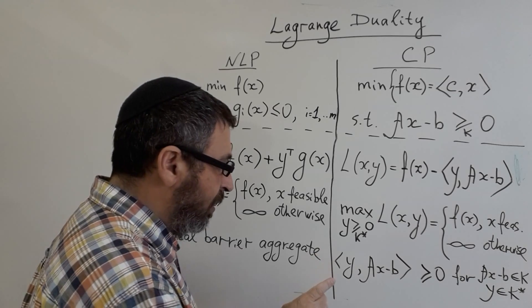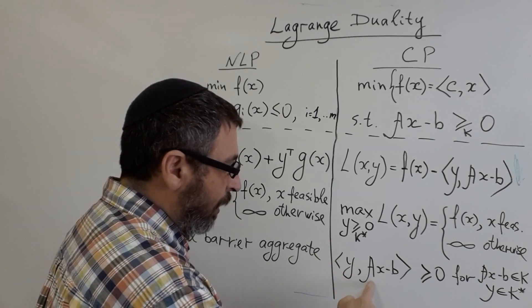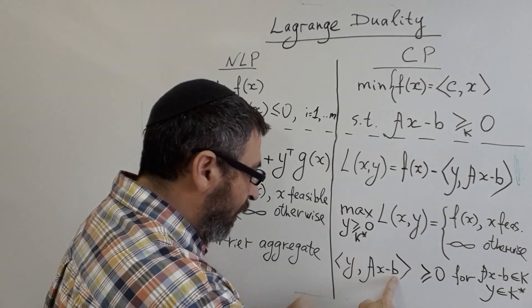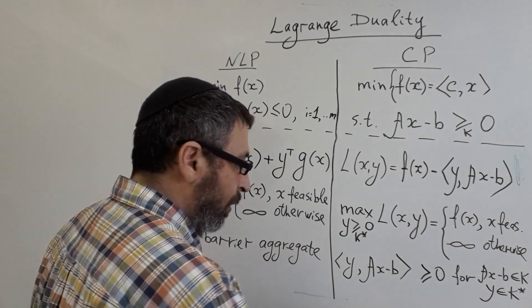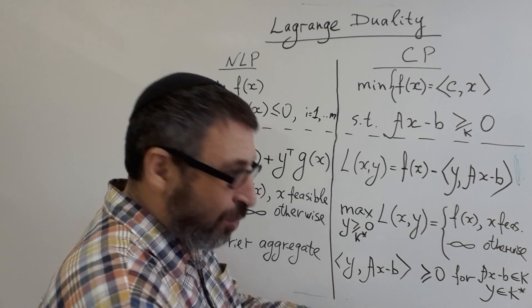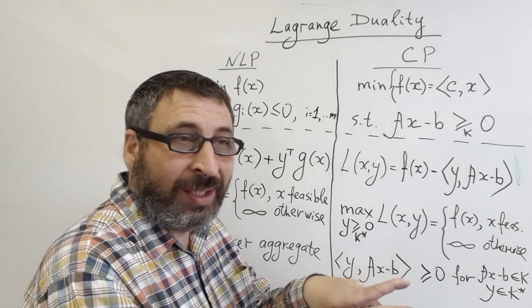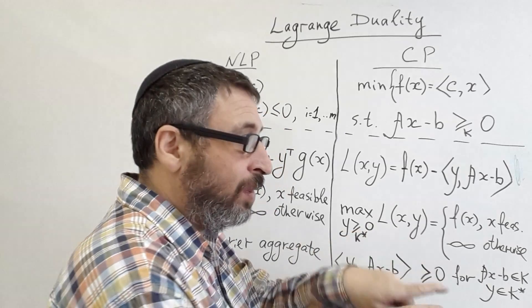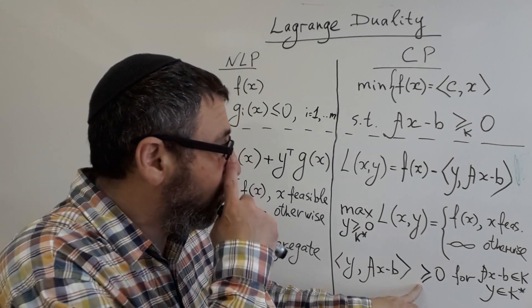How can we see it? Suppose that X is feasible. Y belongs to dual cone. And for feasible X, constraints are satisfied, meaning A X minus B belong to primal cone. By definition of dual cone, we know that inner product of vectors from dual cone with vectors of primal cone are non-negative.